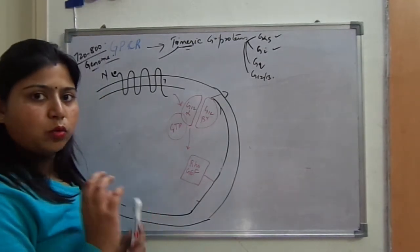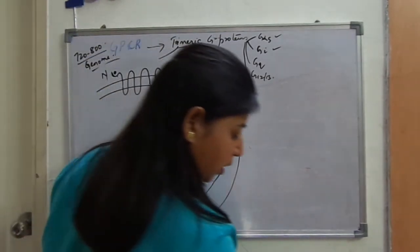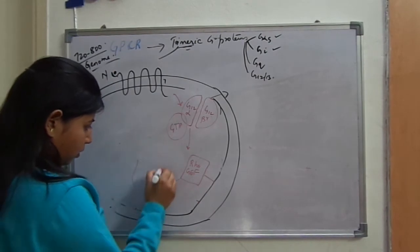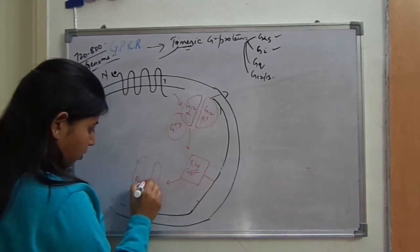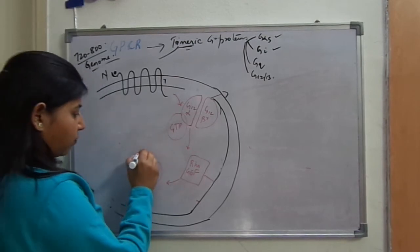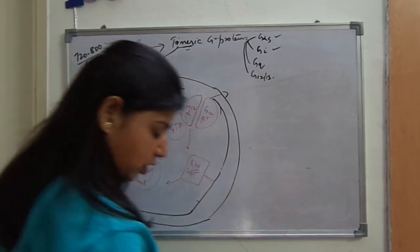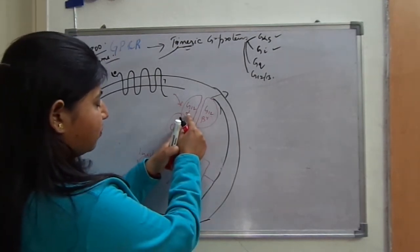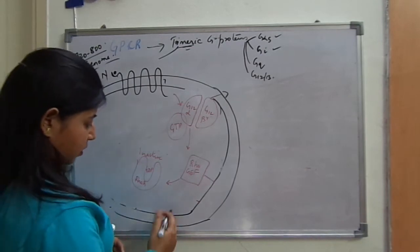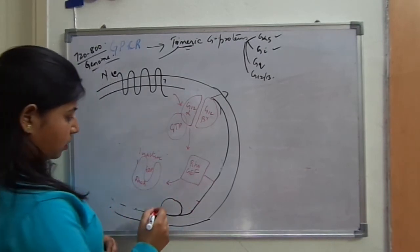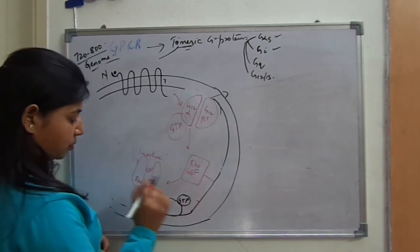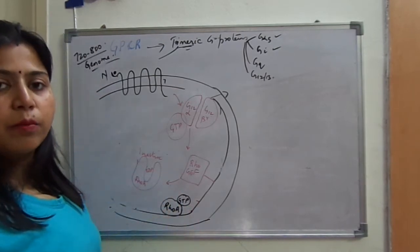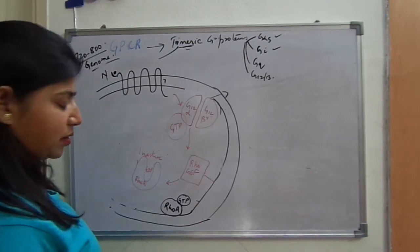Rho-GEF stands for guanine nucleotide exchange factor. Rho-GEF further activates a protein known as Rho-A, which is bound to GDP in its inactive form — remember, inactive forms are always GDP-bound. Rho-A is present in the cytosol. Rho-GEF, activated by G12-alpha, brings Rho-A to the plasma membrane, where GTP binds to it and Rho-A becomes active.